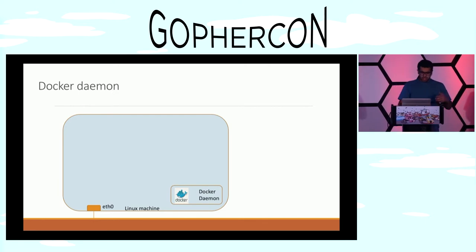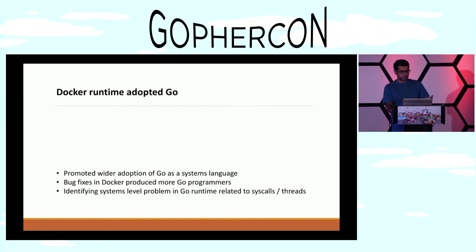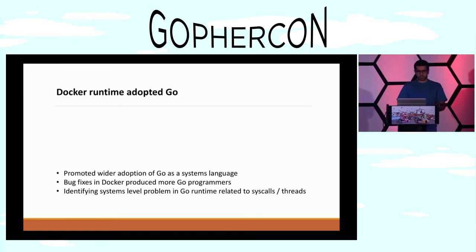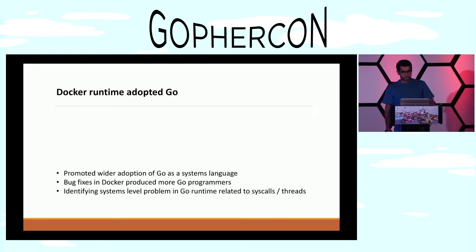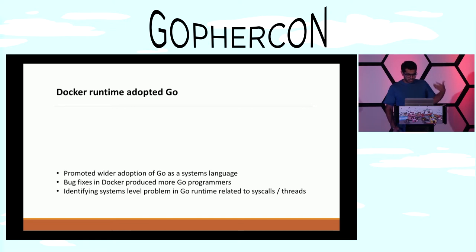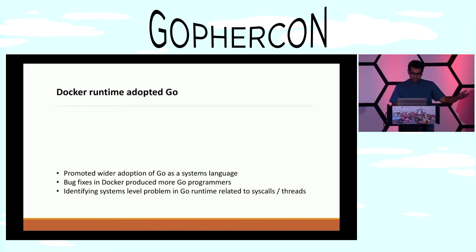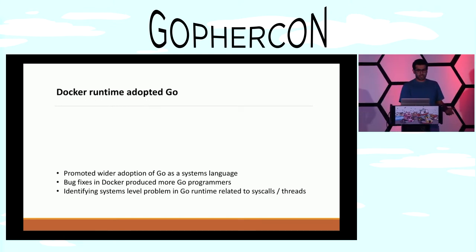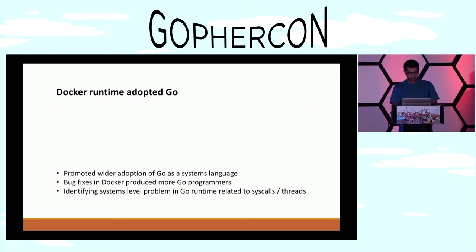Docker adopted Go for all the right reasons, but it also helped Go in a way that it promoted wide adoption of Go as a systems language. It helped fix bugs — whoever was fixing bugs in Docker was producing more Go programmers, like one example here. And it also helped in identifying some of the system-level problems which the Go runtime had, which were related to syscalls and threads. And that's what I'm going to be talking about today.